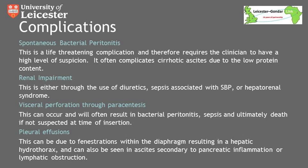The last complication to consider is pleural effusions. Due to accumulation of fluid within the abdomen, some fluid can cross through fenestrations within the diaphragm into the thorax, resulting in what we call a hepatic hydrothorax. These can be bilateral but often present on the right-hand side, and can be due to ascites itself, underlying pancreatic inflammation in patients with chronic pancreatitis, or lymphatic obstruction and chylous ascites. These can be very difficult to manage as drainage may provide short-term relief, but unless you counteract the main cause of the ascites, they are likely to recur even with attempted pleurodesis.